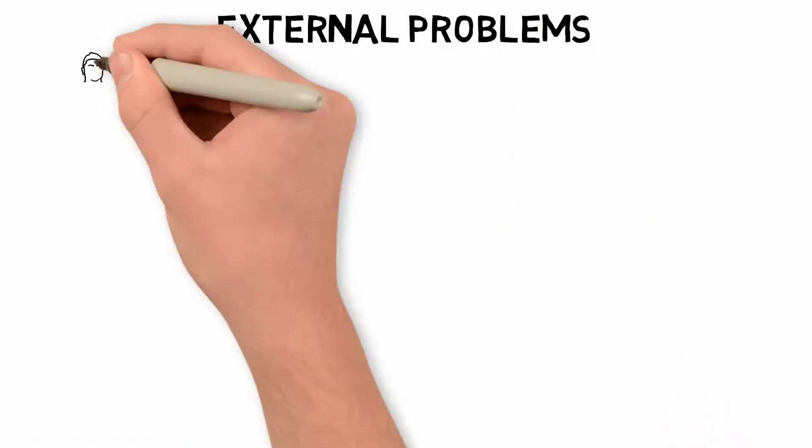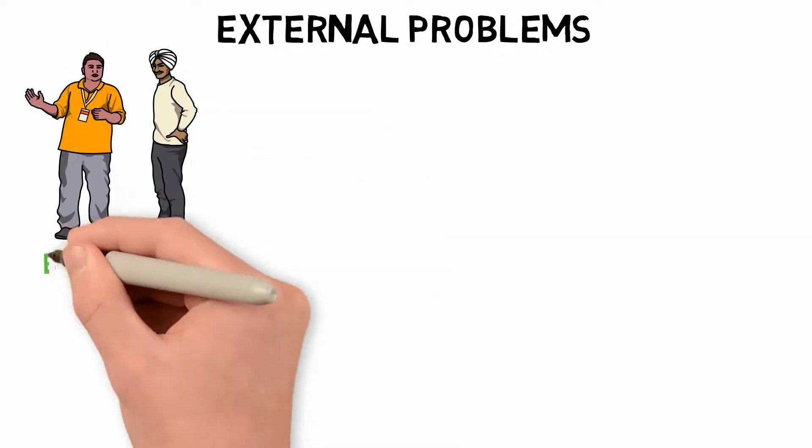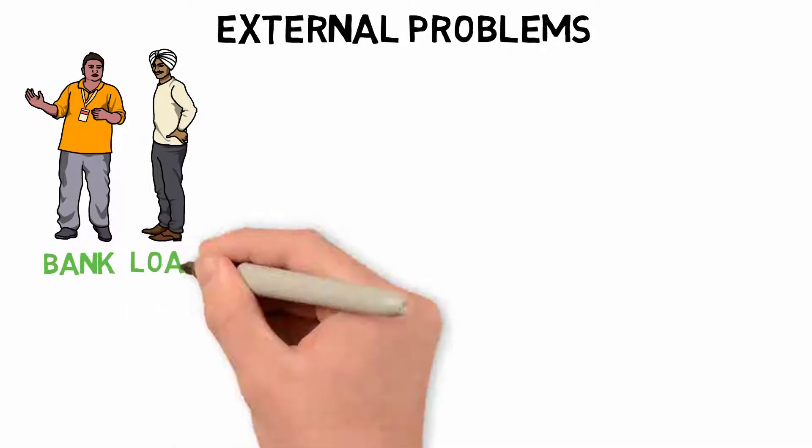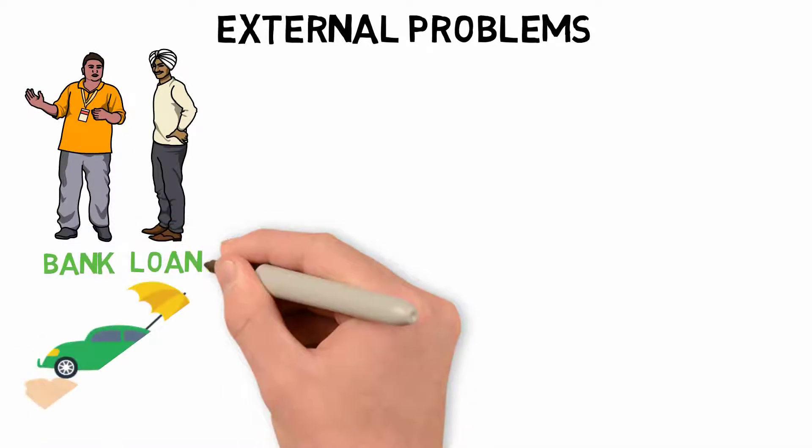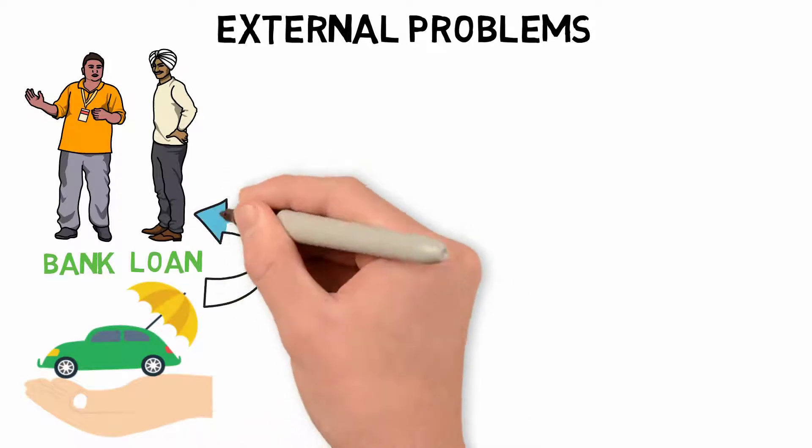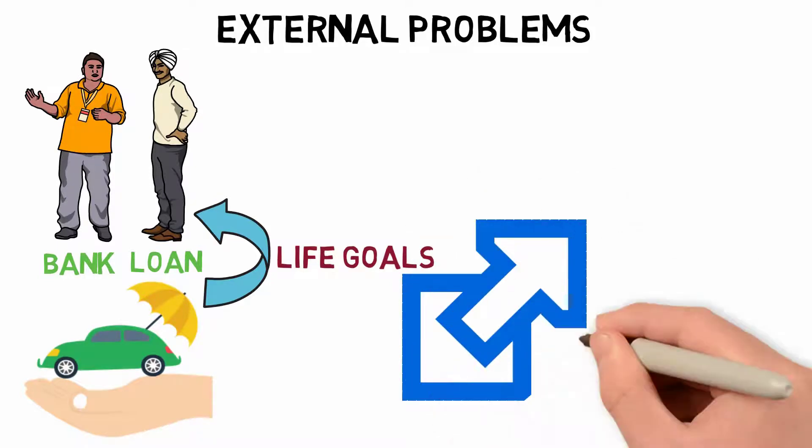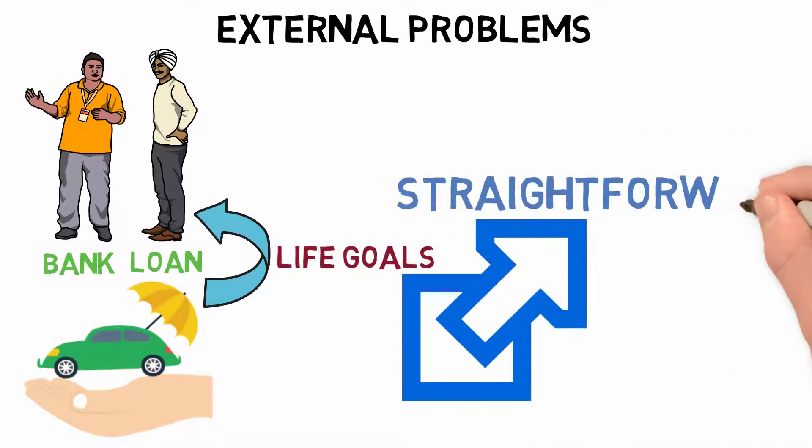External problems are the ones you can see. This could be a client approaching a bank for a loan to buy a property, car insurance in order to drive, or a financial advisor to manage your money and attain your life goals. These are all different difficulties, and they're fairly straightforward to spot.